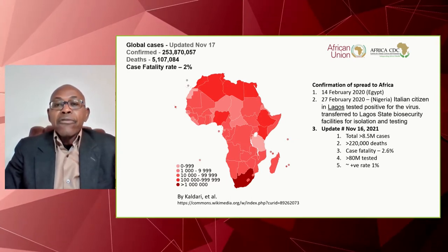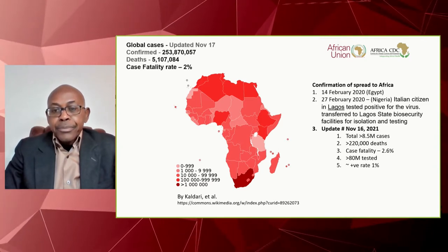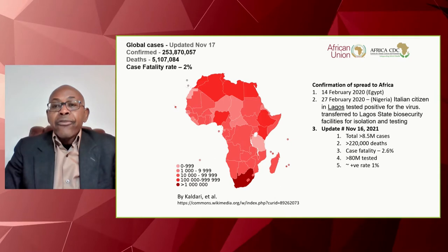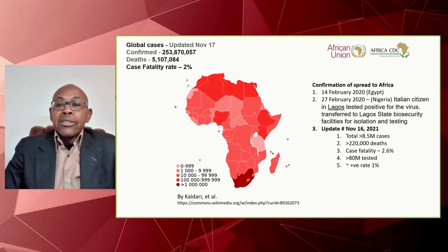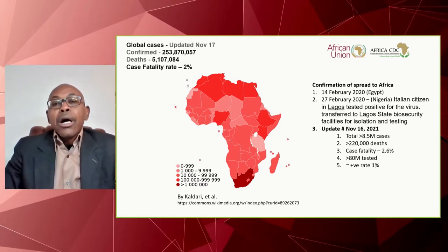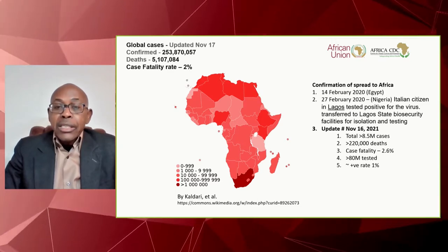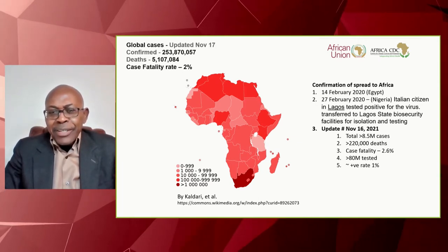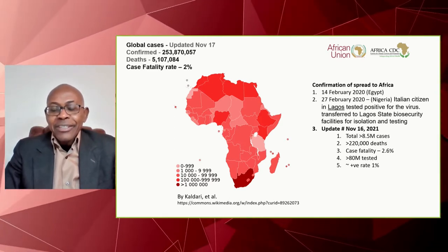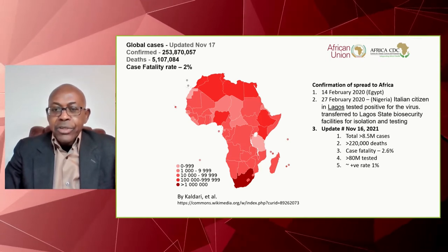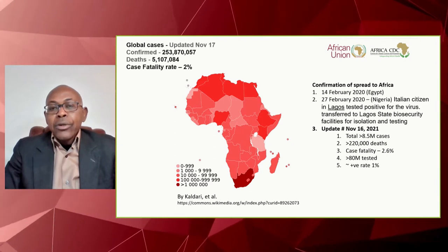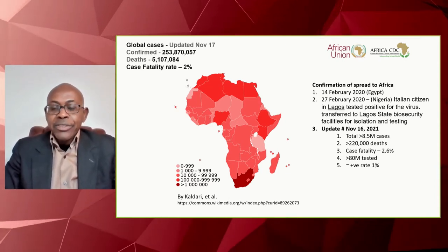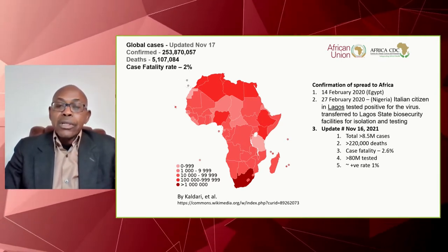Just to remind us: the case fatality rate is about 2% globally, and in Africa it's about 2.6% — a little more deadly, which one would have suspected given that healthcare infrastructure would be seriously challenged by a pandemic like this. The first confirmed case was in Egypt in February last year, and then a couple of weeks after that there was a confirmed case in Nigeria, in Lagos, from a visitor — an Italian citizen. Multiple infections then spread, especially starting in areas with quite a bit of international travel. COVID started among the elite in Nigeria because of travel history. As of November 16, it's a little over 8.5 million cases — numbers I'd encourage you to take with a grain of salt because of lack of comprehensive testing. About 80 million tests have been performed, with a positivity rate of about 1%.